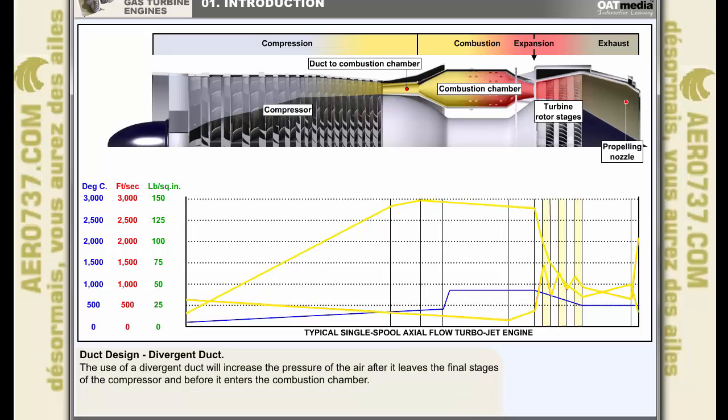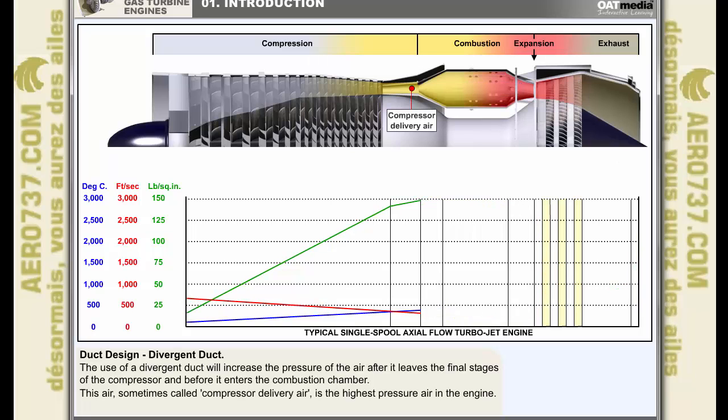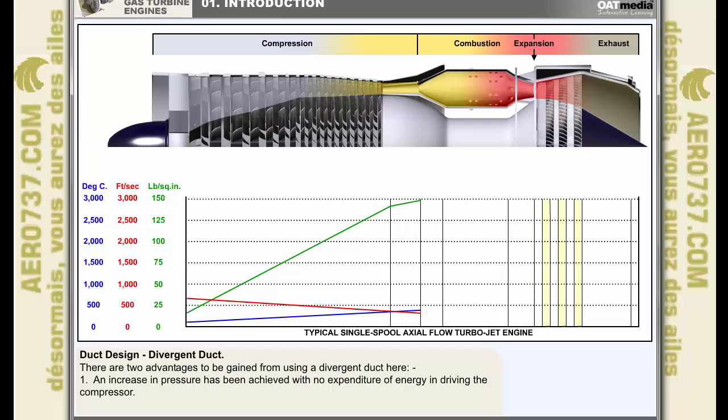In this example of the use of different duct shapes within the engine, it can be seen that the use of a divergent duct will increase the pressure of the air after it leaves the final stage of the compressor and before it enters the combustion chamber. This air, sometimes called compressor delivery air, is the highest pressure air in the engine. Using a divergent duct here gives a two-fold advantage. First, an increase in pressure has been achieved with no expenditure of energy in driving the compressor. Secondly, a decrease in velocity has been contrived, which will serve to make the task of the combustion chamber in keeping the flame burning less difficult.